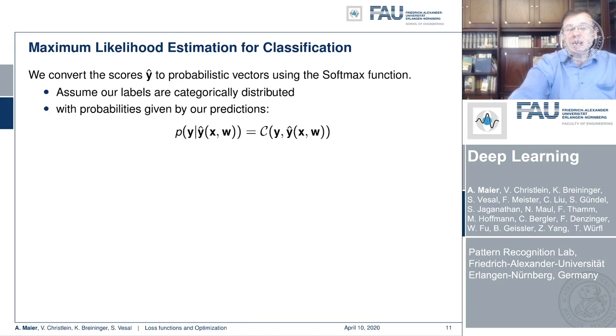Again, what we're doing here is of high relevance for all exams. Everybody should be able to explain how to come from a probabilistic assumption to the respective loss function using the categorical distribution. Here we again apply the negative log likelihood. We plug in the definition of the categorical distribution, which is simply the product over all our yk to the power of the ground truth label.